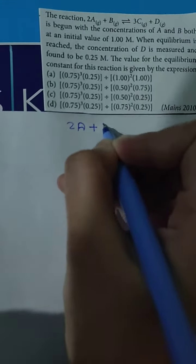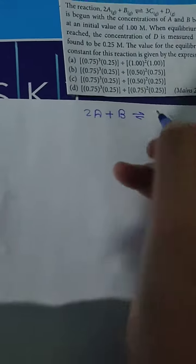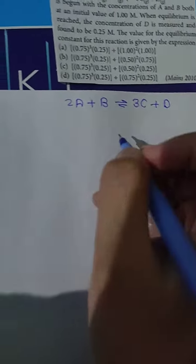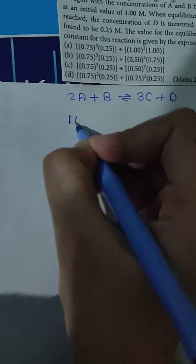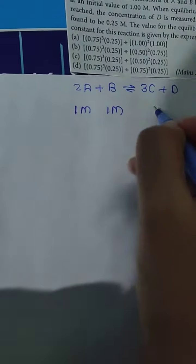The reaction is 2 moles of A plus B giving us 3 moles of C plus D. When the reaction starts, both A and B have initial concentrations of 1 molar. The products haven't formed yet, so C and D are both zero at the start.